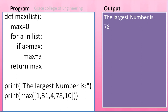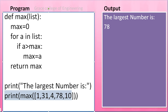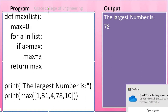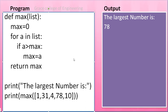Let us see the program. The main function starts here. Print the largest number — you can see the output side by side. Next, print max(list) — the function is called and it will automatically move to the function definition. The list is passed as a parameter. Starting with max = 0, the first element 1 moves to a. If 1 is greater than 0, max = a, so 1 is stored in max. This continues up to the last element of the list. Finally, the largest element is 78.